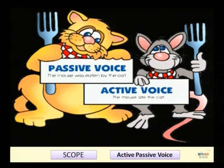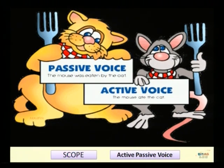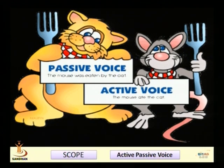Depending on these variations, we will be able to decide whether it is active voice or passive voice. Please look at the PPT — you will find a picture. You can see a cat and a mouse. The sentence of active voice reads: 'The cat ate the mouse.' And the sentence of passive voice reads: 'The mouse was eaten by the cat.' The mouse is supposed to have received the action. This is the major difference between active and passive voice.